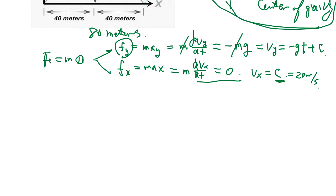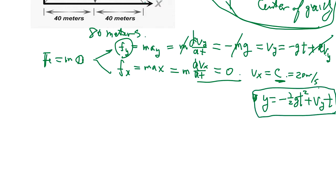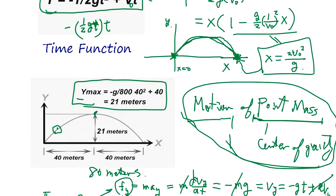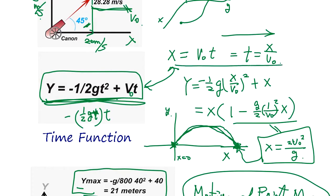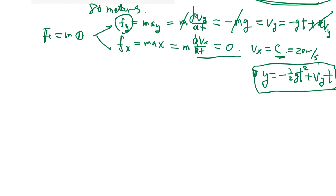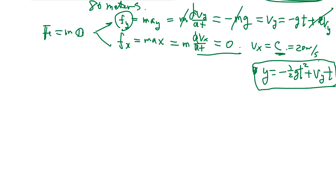We set the coordinate so the initial position is (0, 0). From the equations, we get y as a function of t. Using parameter t and looking to get the trajectory equation y = f(x), we eliminate t by substitution.